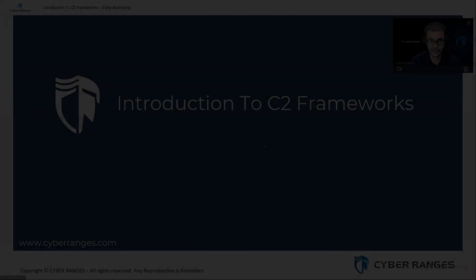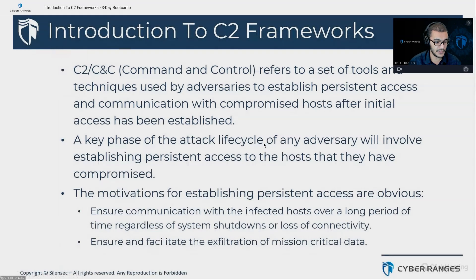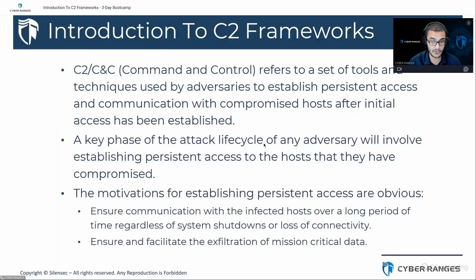So what is C2, or Command and Control? C2, also known as C&C, refers to a set of tools and techniques used by adversaries to establish persistent access and communication with compromised hosts after initial access has been established. A key phase of the attack life cycle involves establishing persistent access — firstly to ensure communication with infected hosts over a long period of time regardless of system shutdowns or loss of connectivity, and secondly to facilitate the exfiltration of mission-critical data.